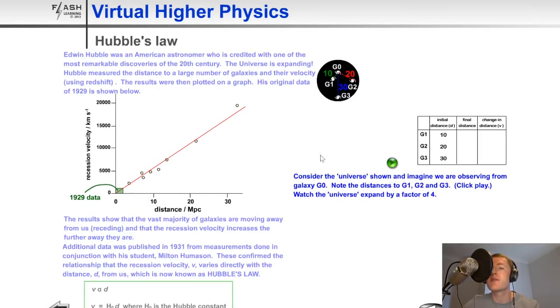So just ignore all this on the left hand side for now. We're looking at this black circle with the galaxies marked on it and we've got a table of initial distance, final distance and changing distance. So imagine some initial point in time you've got four galaxies and we're going to note the distances of G1, G2 and G3 from this galaxy G0.